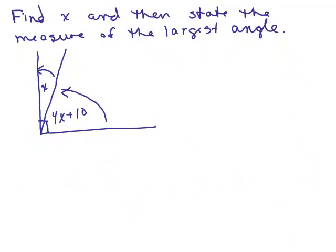Here's a problem for you to try. Find X and then state the measure of the largest angle. Put the video on pause and try this one on your own first. Again, you see this little mark — that shows it's a 90 degree angle. So together these angles add up to 90 degrees. The first angle plus the second angle 4X plus 10 has to equal 90 degrees.